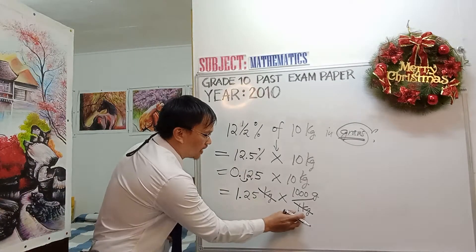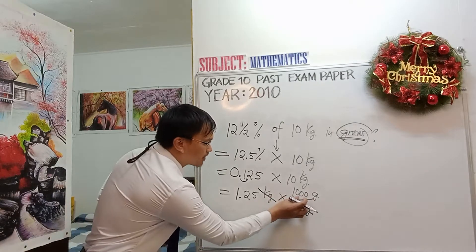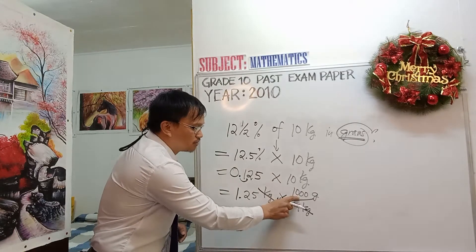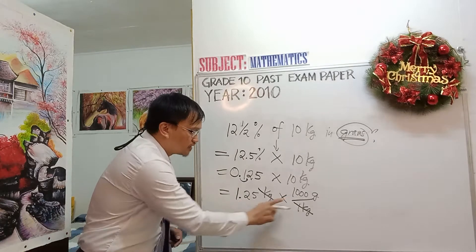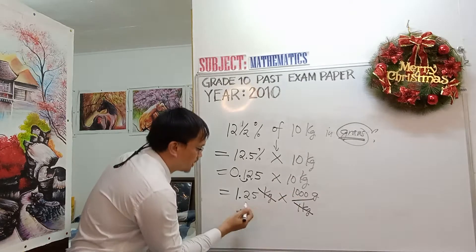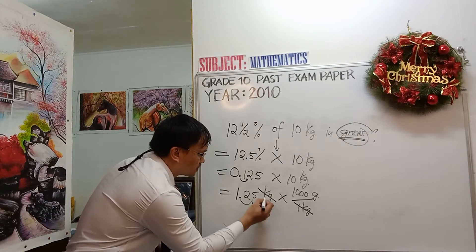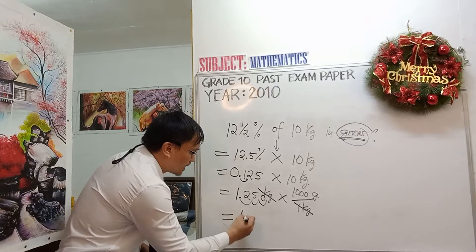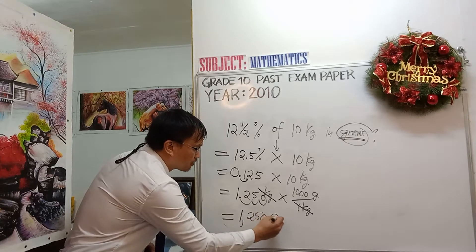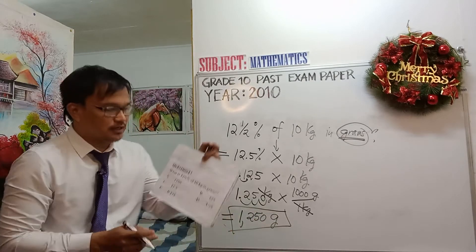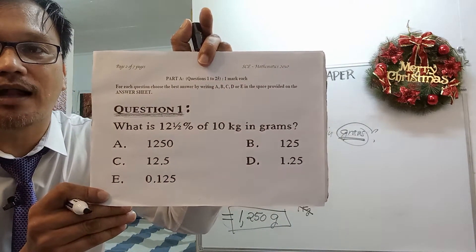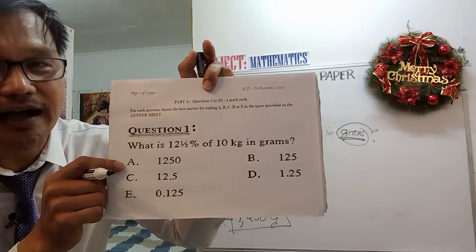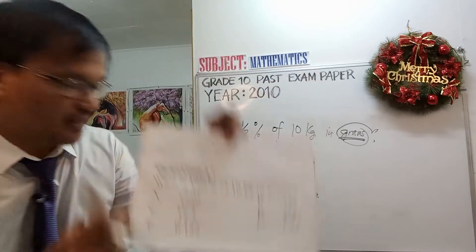Now we are left with grams. Since we are multiplying by 1,000 — which has three zeros — move the decimal point of 1.25 three places to the right: one, two, three. You need to add another zero, giving 1,250. Therefore the final answer is 1,250 grams. The correct answer for question one is letter A.